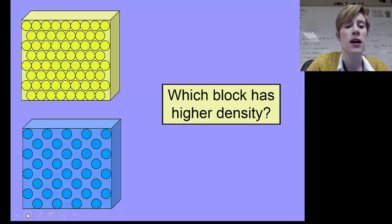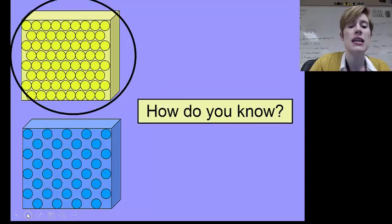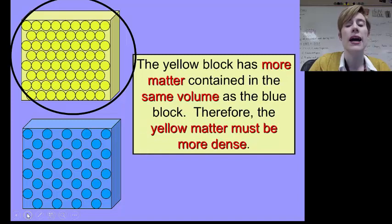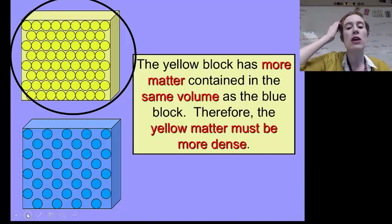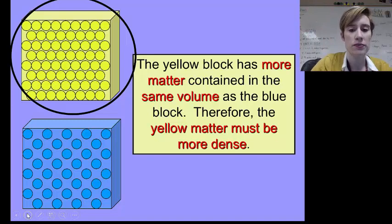Now let's look at the two blocks on the molecular level. The first block up above, you can see all of the little atoms or molecules are packed very tightly together. And in the same amount of space, the blue block has the atoms spaced out. So we can see that the top block has more matter or mass, but it's contained in the same amount of volume as the blue block. Therefore, the yellow matter is more dense because density is a measurement of mass per volume.